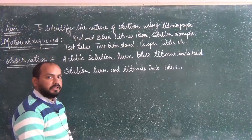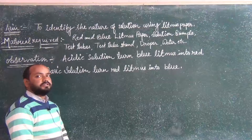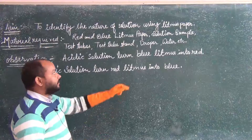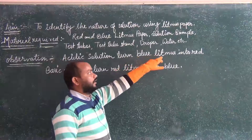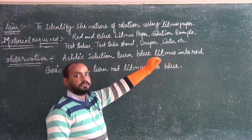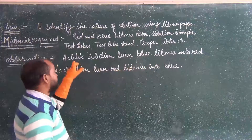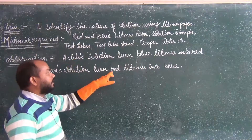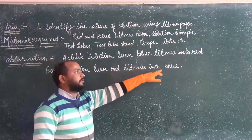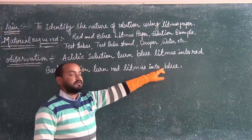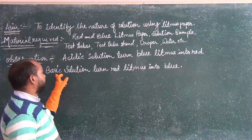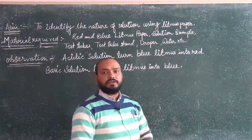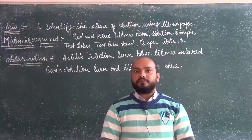So students, in this way you can identify the nature of different solutions using litmus paper. If the blue litmus paper turns red in a given solution sample, then the solution is acidic in nature. And if the red litmus paper changes to blue, then the given solution sample is basic in nature. I hope you have understood the activity. Thank you for watching.